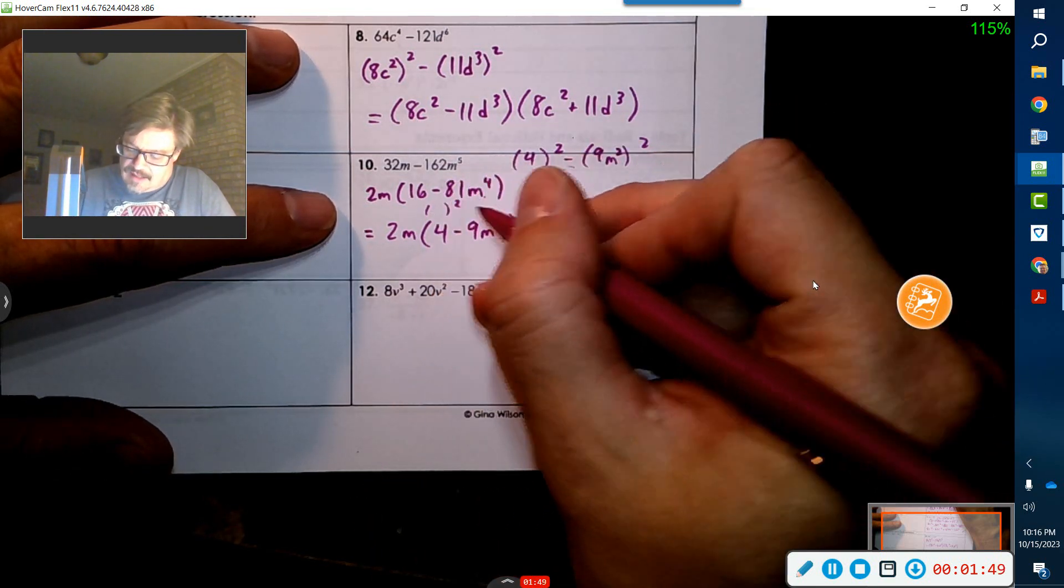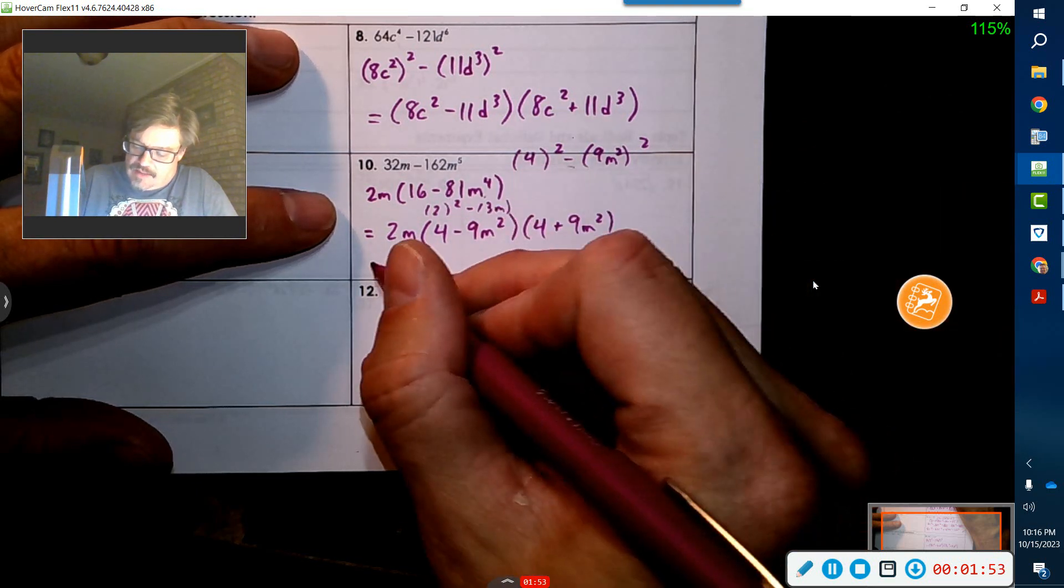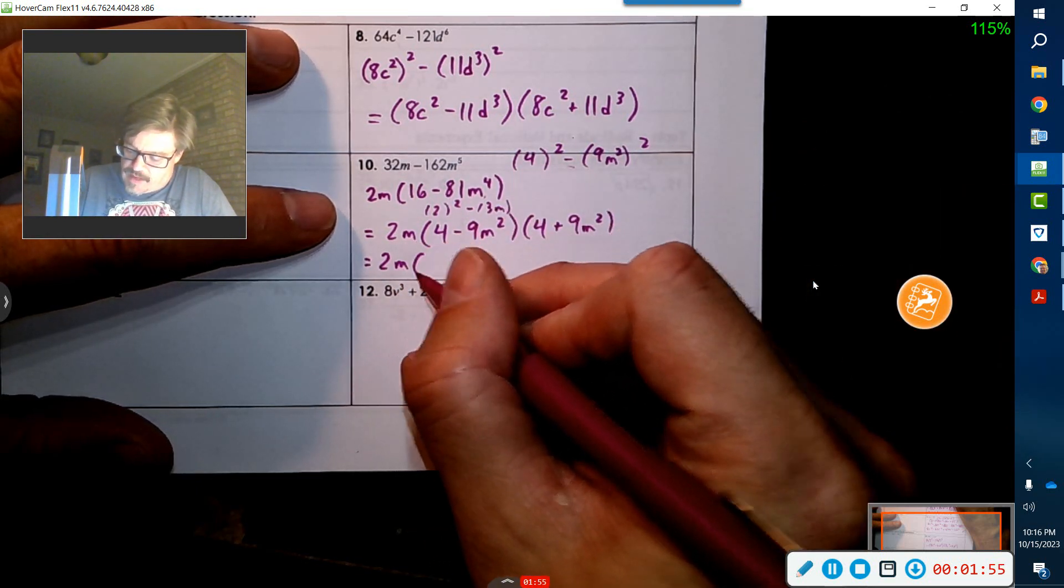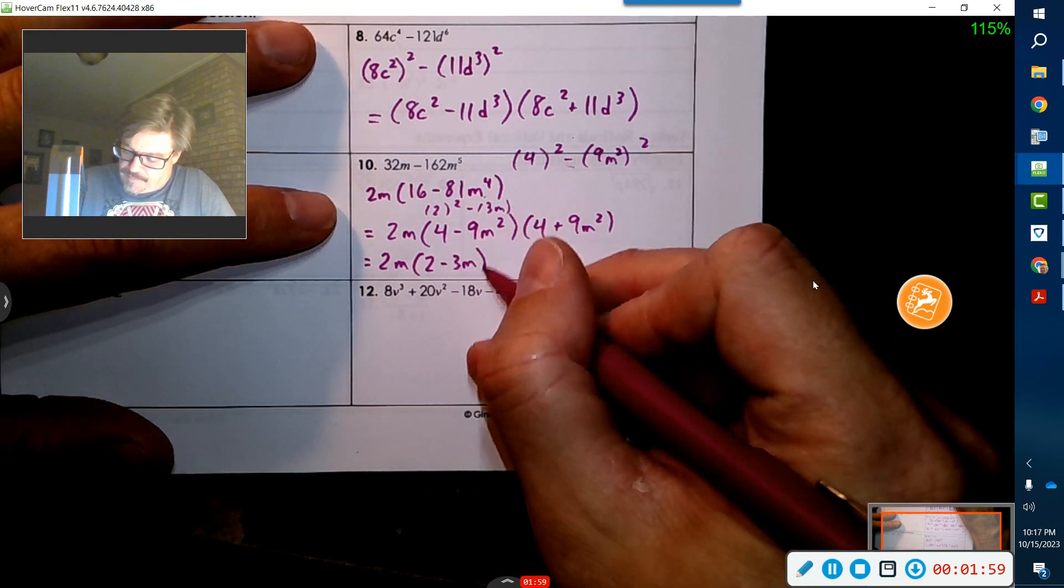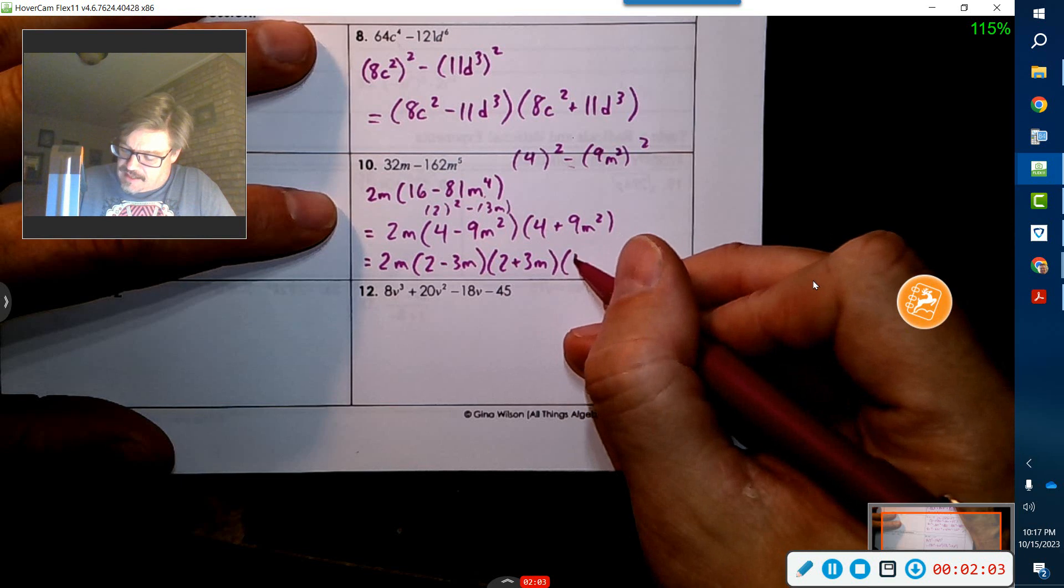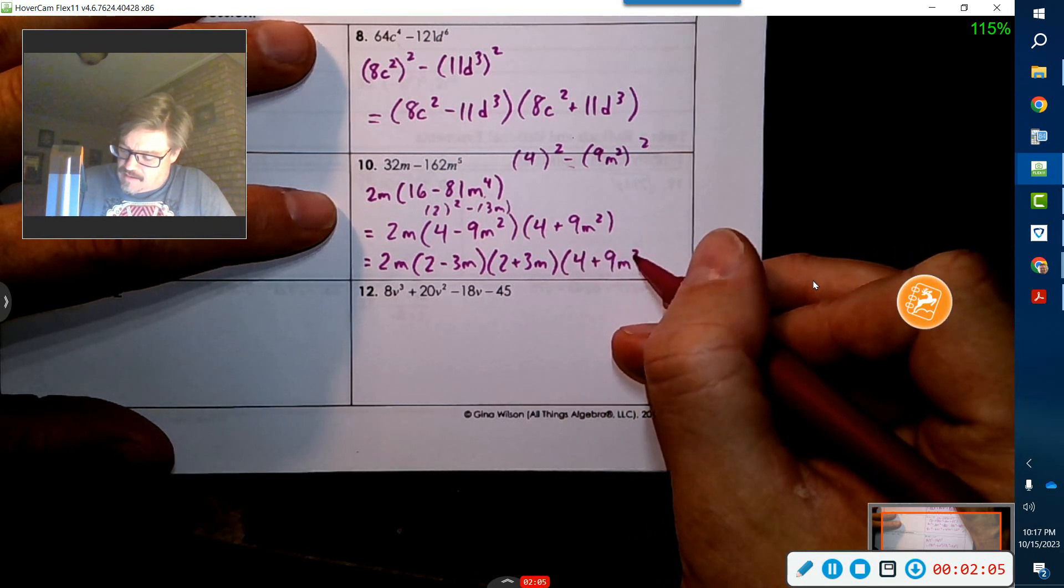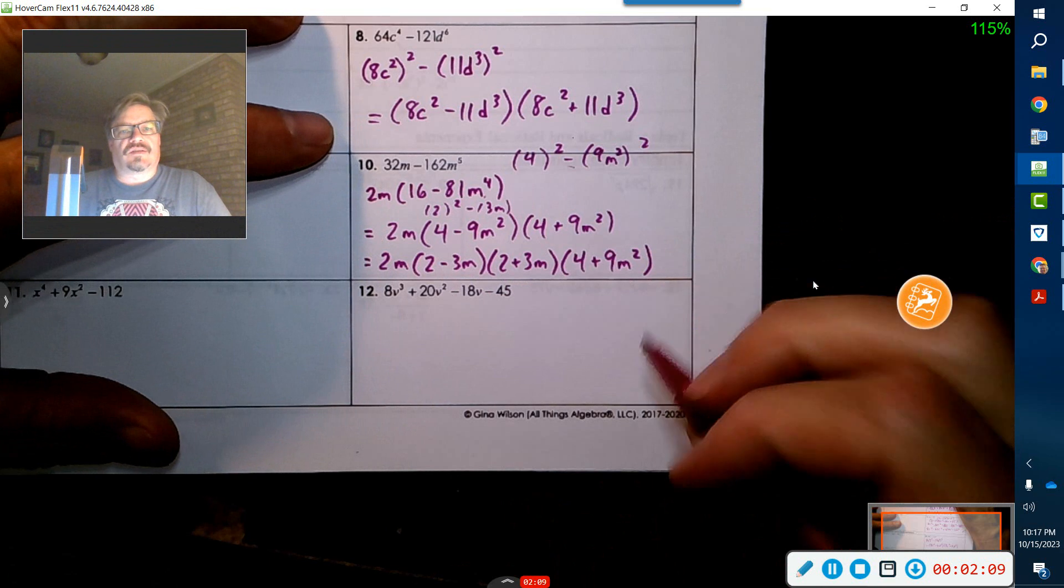So this one, the guy is, let's see, two, and then that's three M. Okay. So now we got two M, and then two minus three M, two plus three M, and then I still got this guy. Okay. That is completely factored. So that's quite an awesome thing.